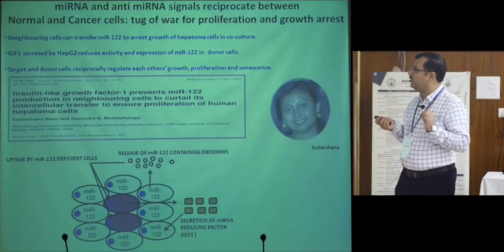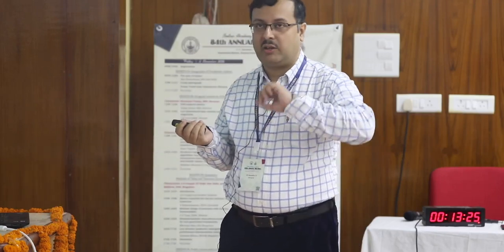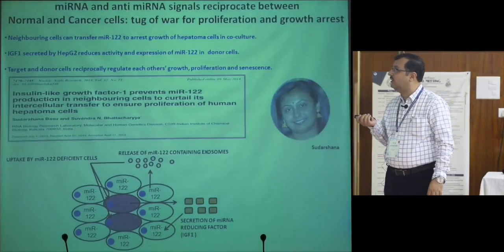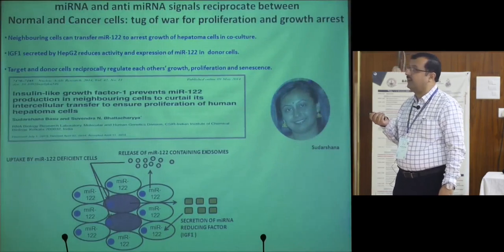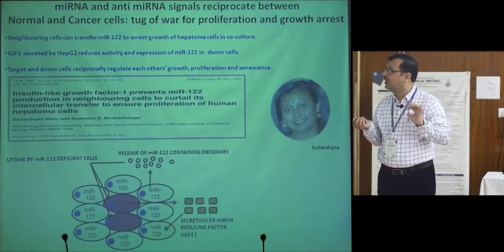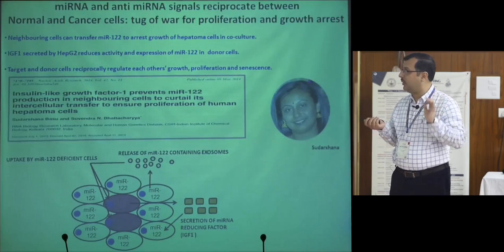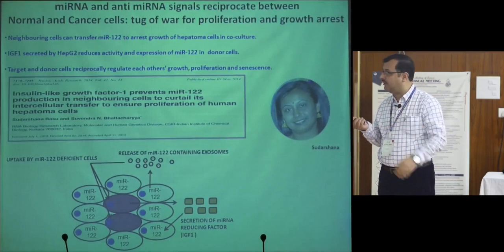To study this, we have a hypothesis: if one set of cells has high microRNA and another has low microRNA and they are in contact or in the same environment, will microRNA get transferred from one cell to the other? Suloshana Basu, a postdoc in the lab, did that experiment. She found that in normal versus cancer cells, microRNA-122 — a hepatic microRNA expressed exclusively in hepatic cells — is lost when hepatic cells transform into cancerous cells.